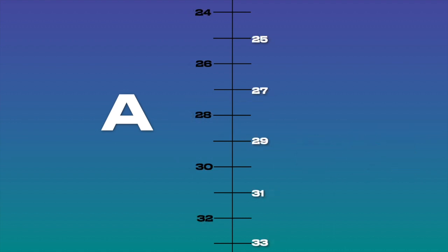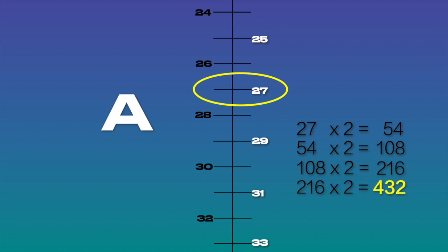However, A432 enters the series at harmonic 27. We can calculate that by successively doubling 27 through its octaves.